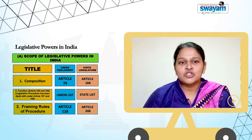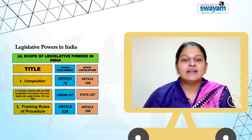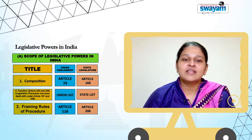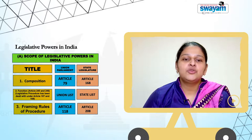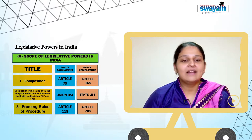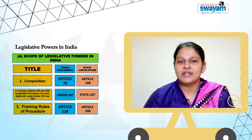Composition. Article 79 provides that there shall be a Parliament for the union which shall consist of the President and two houses, to be known respectively as the Council of States and the House of the People.